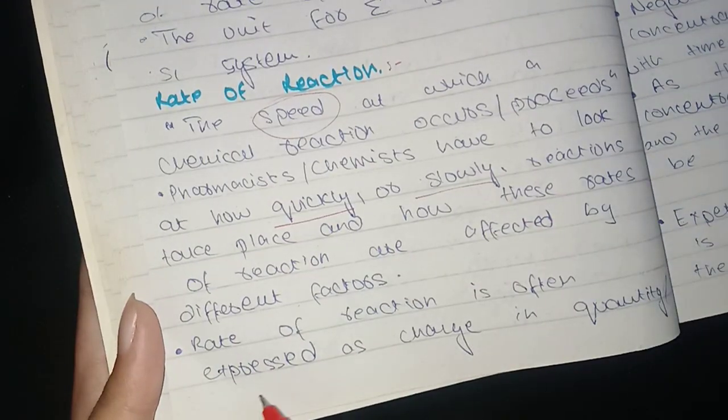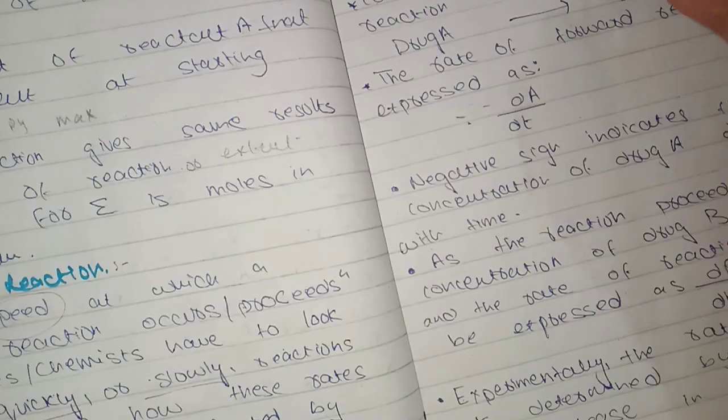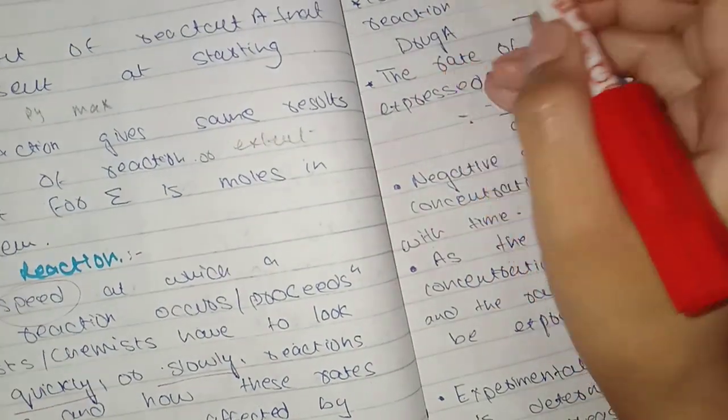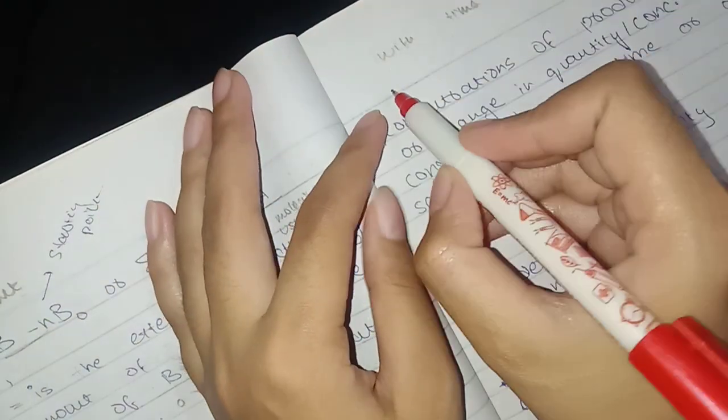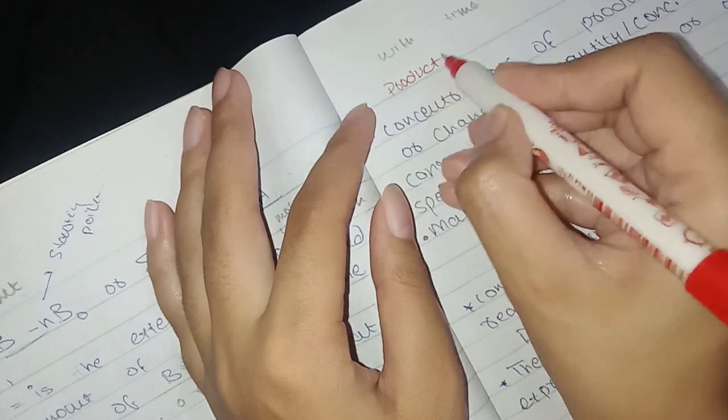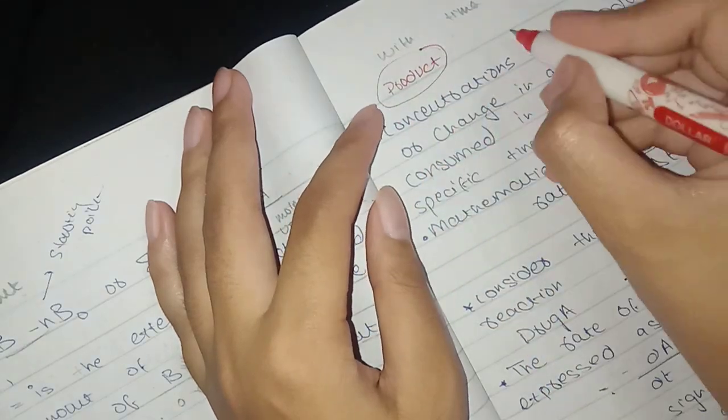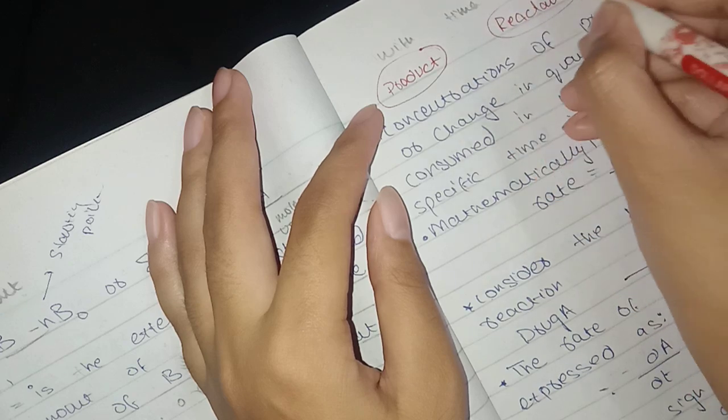The rate of reaction is often expressed as change of quantity or concentration of product found, or the change in concentration or quantity of reactant consumed. We can see how much amount of product has formed or how much amount of reactant consumed.